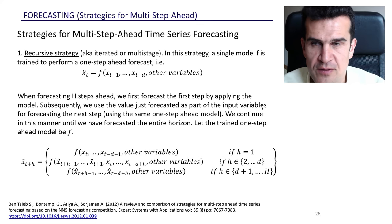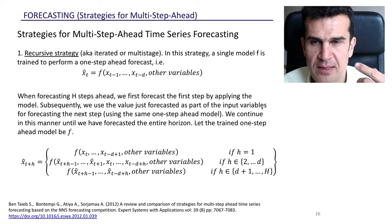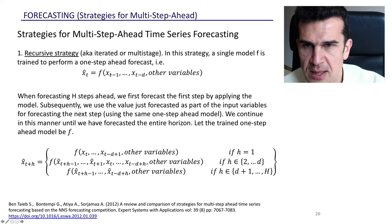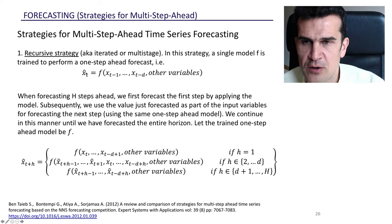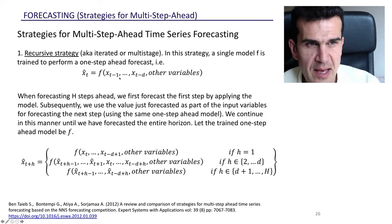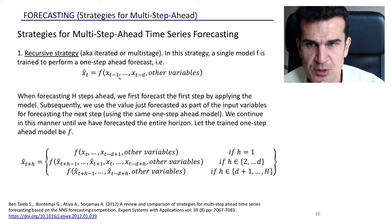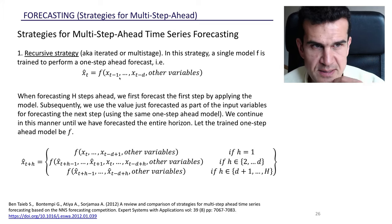The first one is called the recursive strategy and it consists in fitting one single model that makes one-step-ahead forecasts. This model predicts just one step ahead. The general formula: we aim to predict the value of x at time t and we're going to use all the information up to that time t — any information we have from the past — to make the prediction for one step in the future.